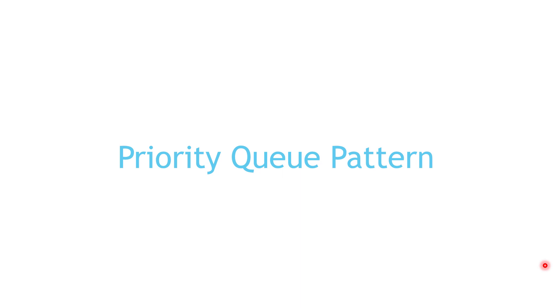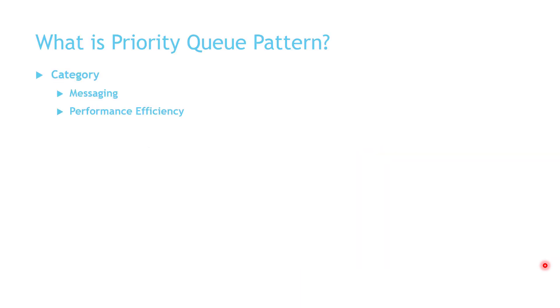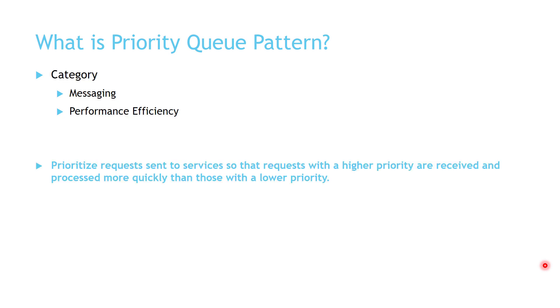Hi everyone, my name is Hassain, and in this video we are going to talk about the Priority Queue Pattern. Priority Queue Pattern comes under two categories of cloud design patterns: the Messaging category and Performance Efficiency. It is about prioritizing requests sent to a consumer or a certain service so that we process higher priority messages before lower priority messages.